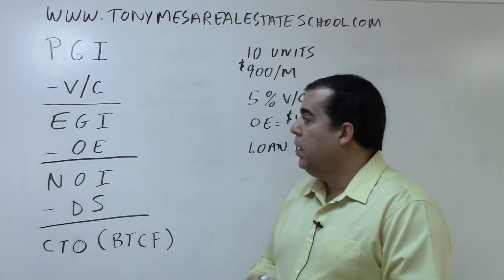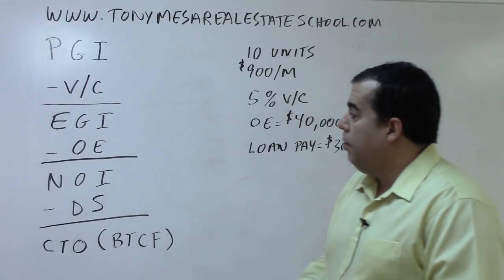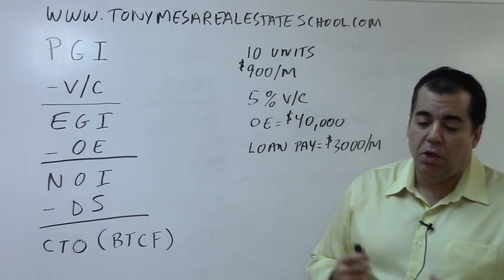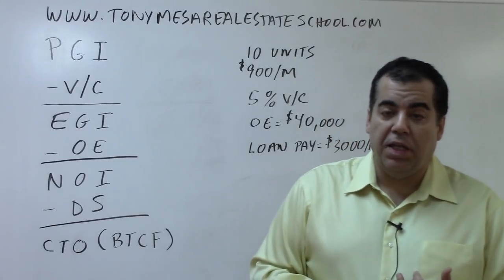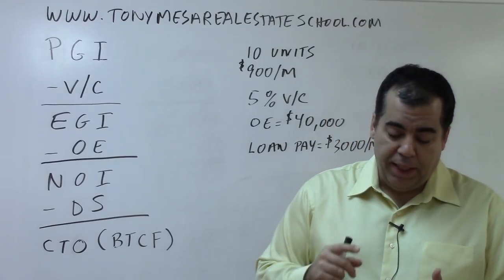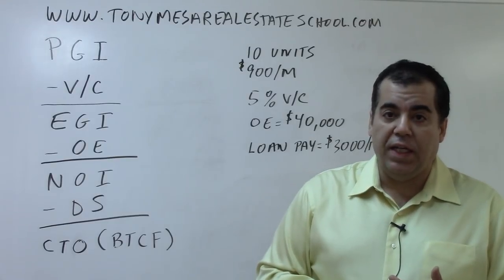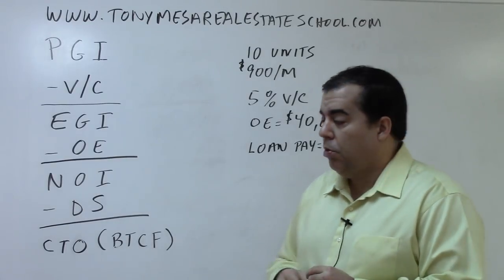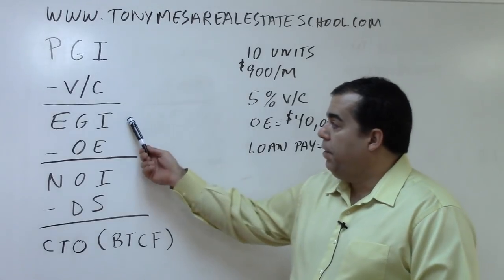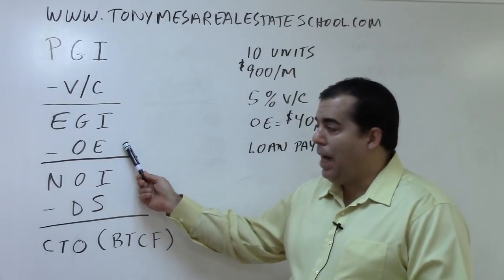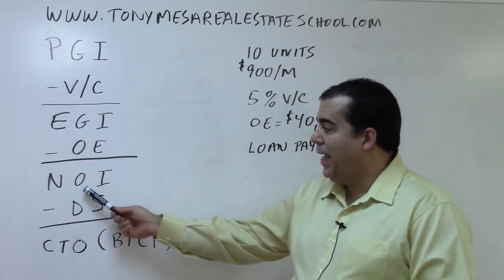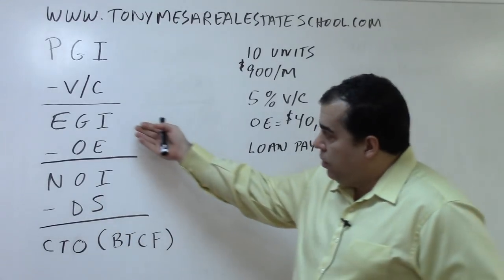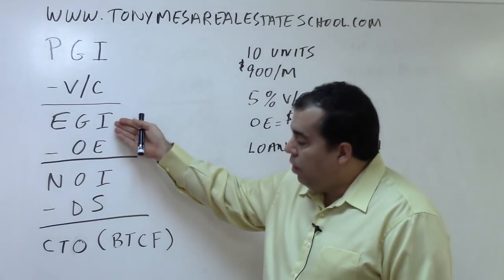From the Effective Gross Income we need to subtract OE — the Operating Expenses. Things like property taxes, insurance, maintenance, common area electrical, and garbage collection. When you take the Effective Gross Income and subtract the Operating Expenses, that gives you the NOI — Net Operating Income. You have the gross, subtract the expenses, and you're left with the net.